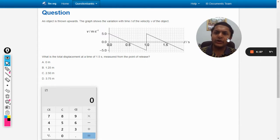Okay, an object is thrown upwards. The graph shows the variation with time t of the velocity v of the object. What is the total displacement at a time of 1.5 seconds measured from the point of release?